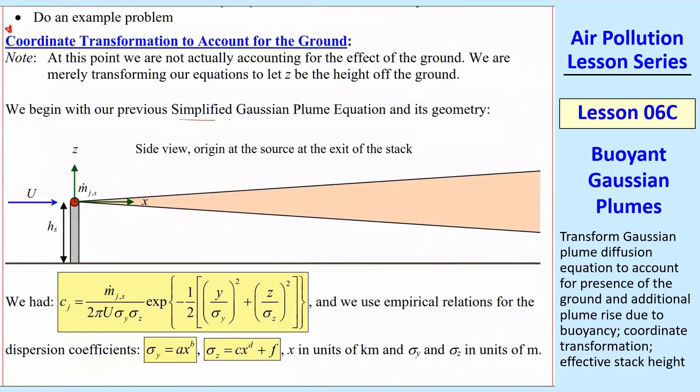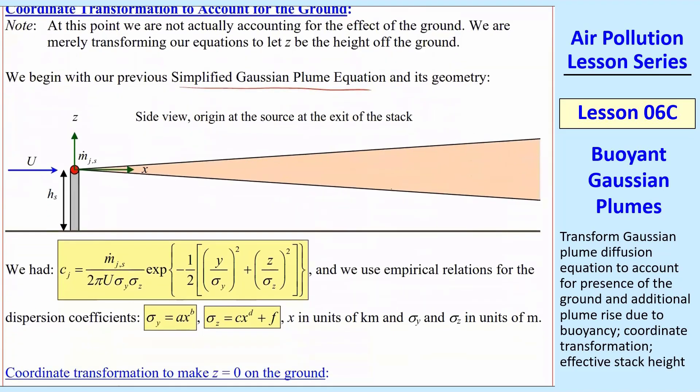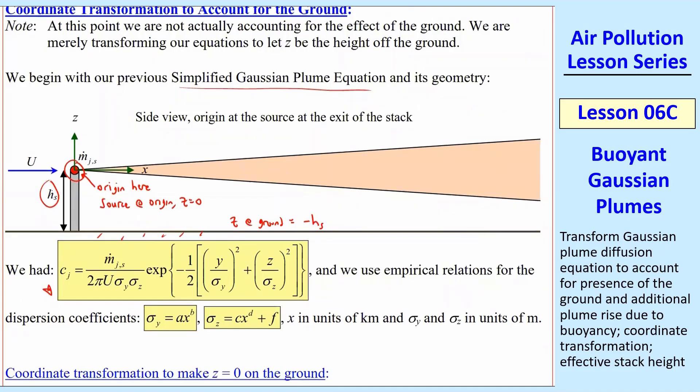Let's look at our simplified Gaussian plume equation from the previous lessons, where we have the source m_js right at the origin where z equals 0, and z at the ground is at negative hs, because hs is the height of the stack. We have our normal Gaussian-looking distribution here. If I plot cj as a function of z where z starts at 0 here, that is the normal Gaussian curve that we expect for mass concentration.